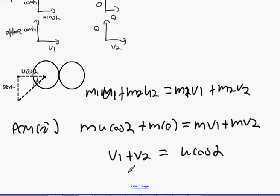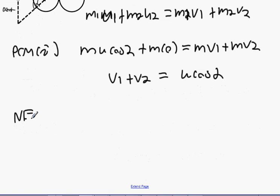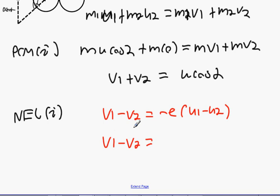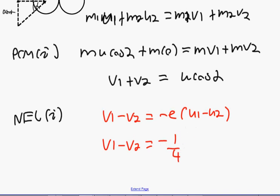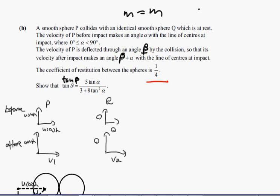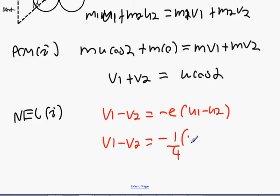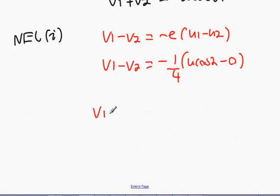Newton's experimental law. V1 minus V2 equals minus E into U1 minus U2. We know that E is a quarter, so it's going to be minus a quarter into U cos alpha minus 0. And what we're going to get is V1 minus V2 is minus U cos alpha over 4.